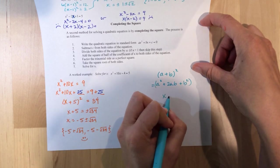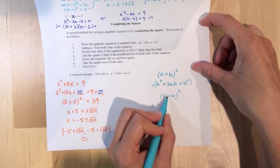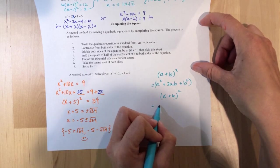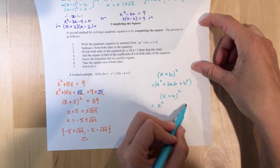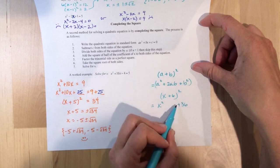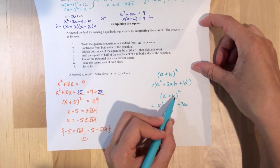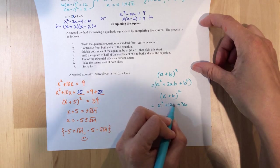So, for example, if I gave you x plus 6 quantity squared, to get the first one, you square the first thing. So, in this case, it's x. To get the last term, you take the last number and you square it, which is, in this case, 36. To get the middle term, you combine and double. So, that would be plus 12x.